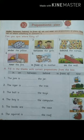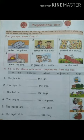Here you can see six pictures. The cat is under the pillow. The cat is between the girls. In the first picture, the cat is under the pillow. In the second picture, the cat is between the girls. In the third picture, the cat is behind the curtains. In the fourth picture, the cat is near the fire. In the fifth picture, the cat is in front of its mother. In the sixth picture, the cat is on the wall.